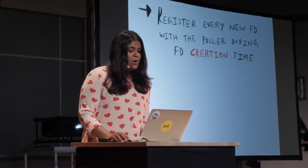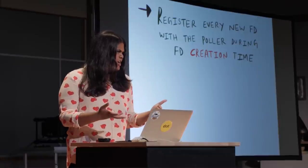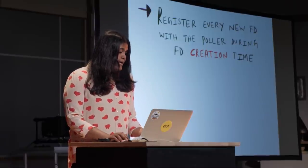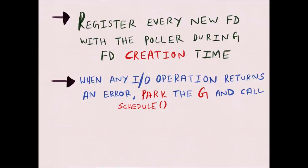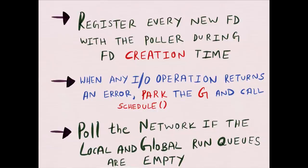To recap: when we perform a network operation in Go, every new network file descriptor gets registered with the network poller at creation time. When any I/O operation returns an error — when it potentially blocks — we park the goroutine, schedule it away from the current thread, and call schedule to find another runnable goroutine for that thread. When we call schedule, we poll the network if we don't find any goroutines in the local or global run queues, giving us a list of all goroutines that were previously blocked on network I/O and can now be run.